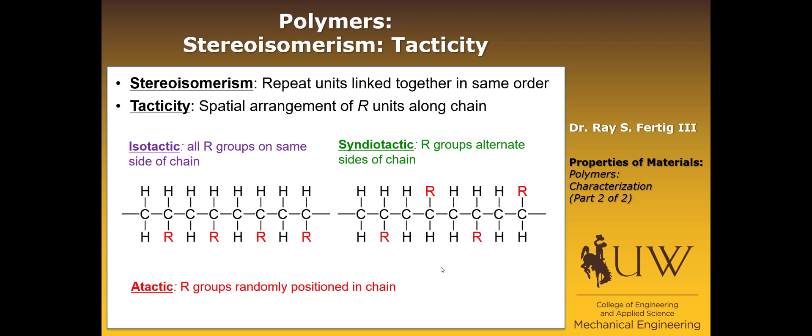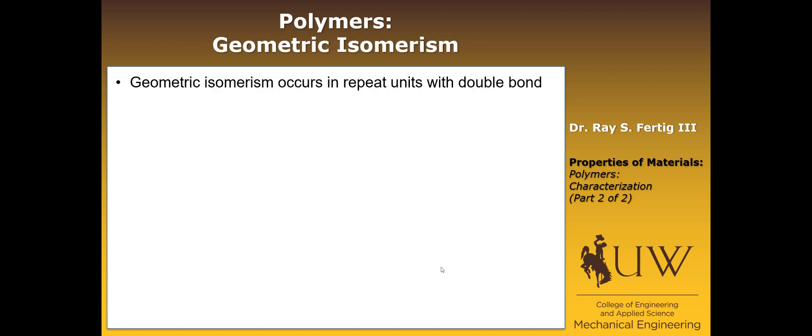So stereoisomerism is one type of isomerism. A second type is geometric isomerism. And this specifically occurs when we have a repeat unit that incorporates a double bond.